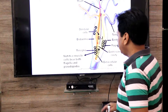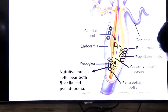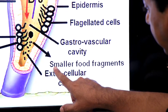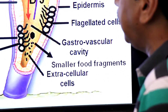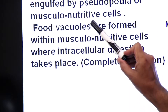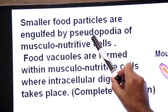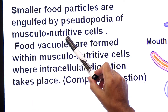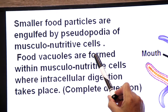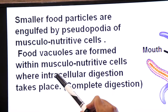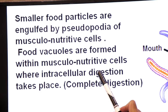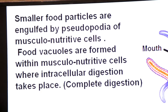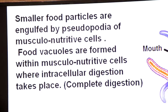This is intracellular digestion. In nutritive muscle cells, intracellular digestion takes place. Smaller food particles are engulfed by pseudopodia of musculonutritive cells. Food vacuoles are formed through endocytosis within musculonutritive cells, where intracellular digestion is completed. In Hydra, digestion is both extracellular and intracellular.